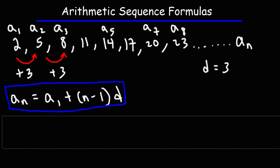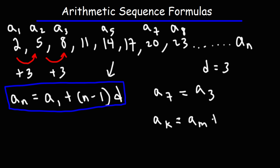There are other similar formulas related to this one. For instance, if we want to find some term in a sequence but we don't know the first term — say we want to find the seventh term from the third term — here's another generic formula: a sub k equals a sub m plus (k minus m) times the common difference.